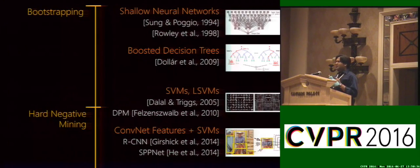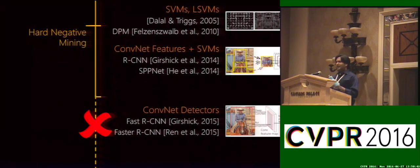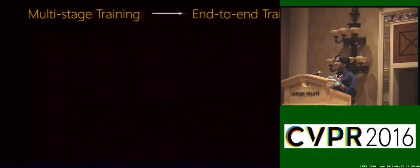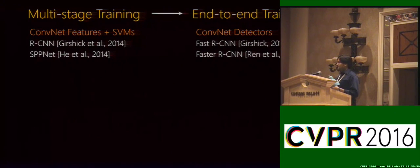But unfortunately, due to technical difficulties, the latest state-of-the-art object detectors like Fast and Faster RCNN had to abandon this well-trusted hard negative mining. The core reason behind this is the trend of moving from multi-stage training pipelines to end-to-end learnable systems. Object detection has also followed this trend, which has led to improved accuracy and much simpler training.